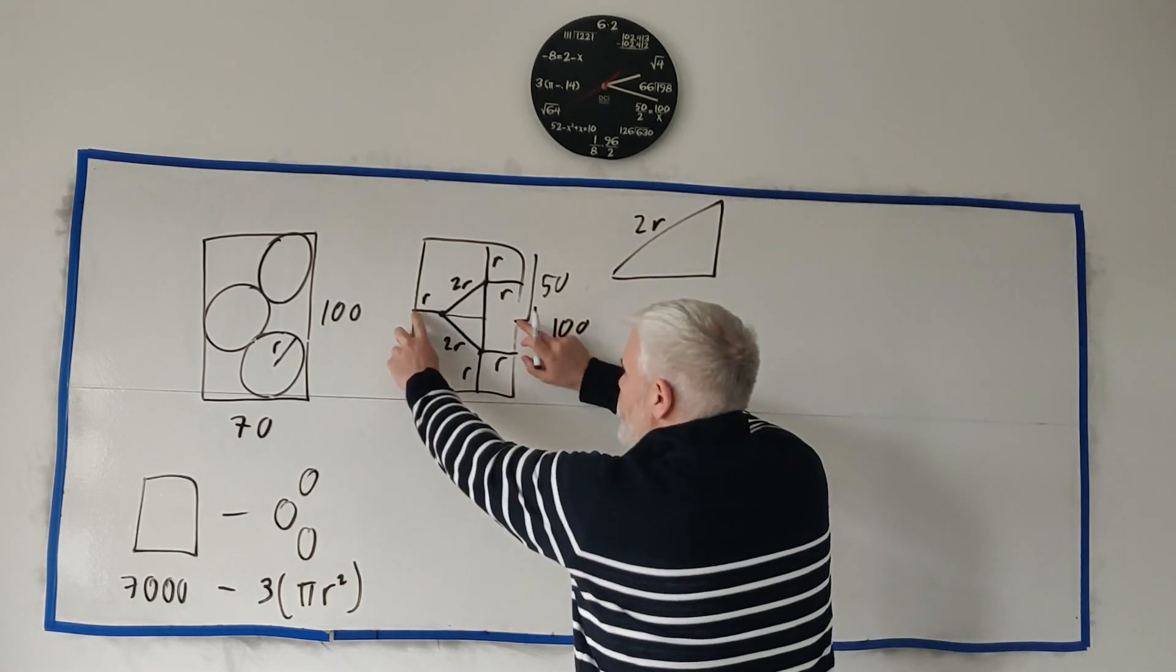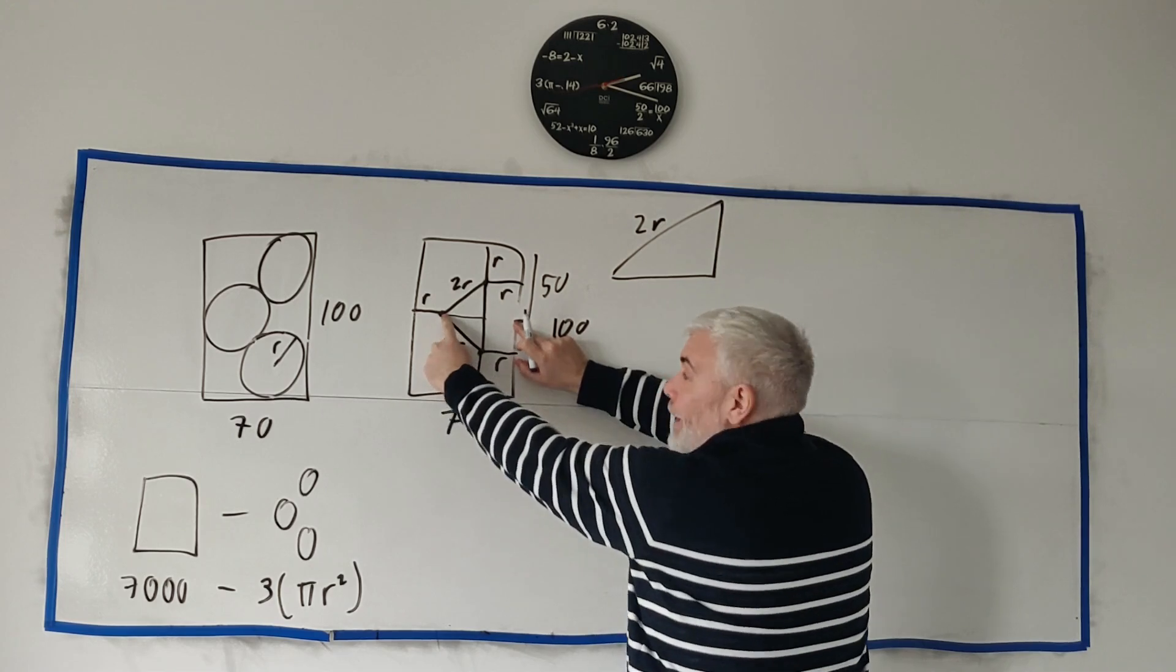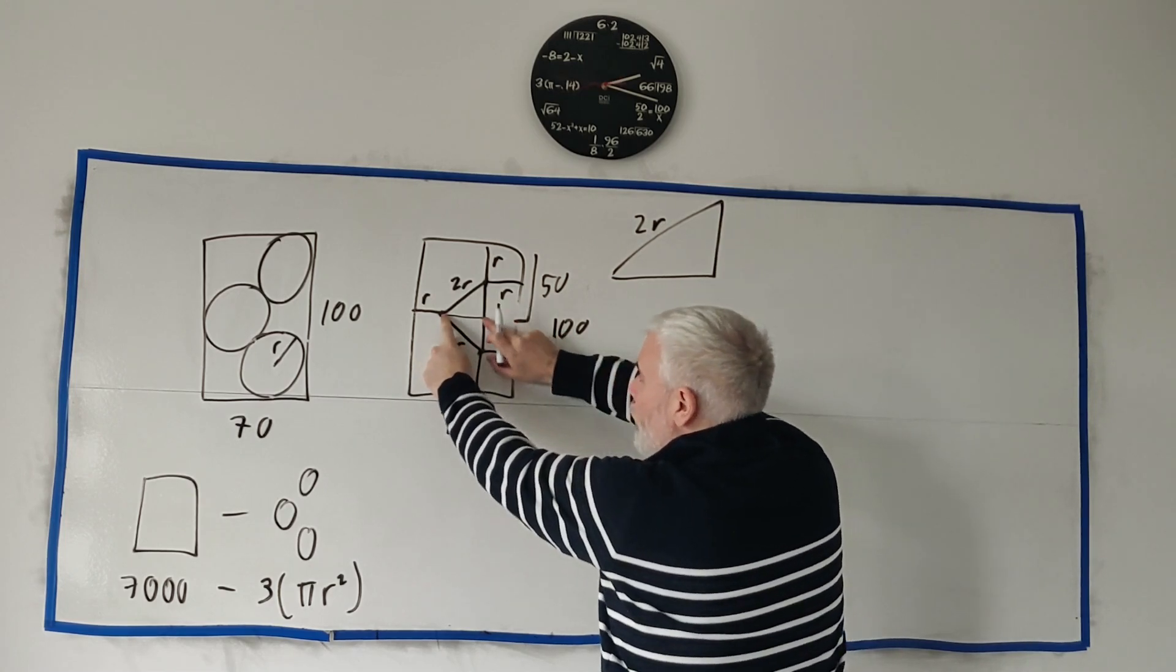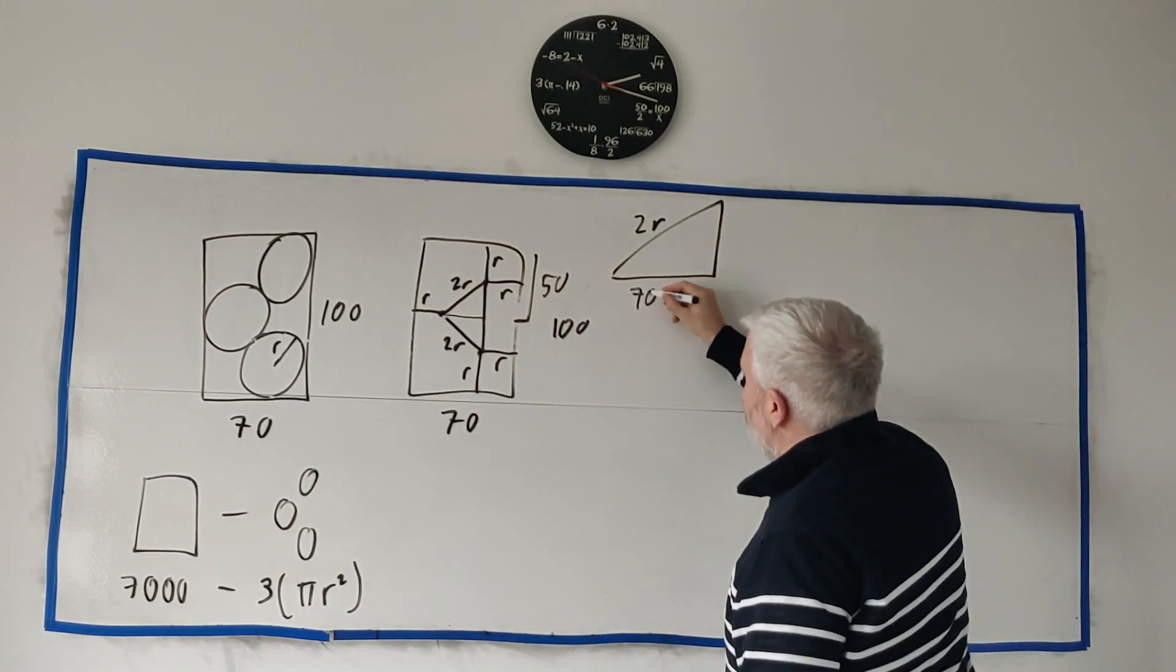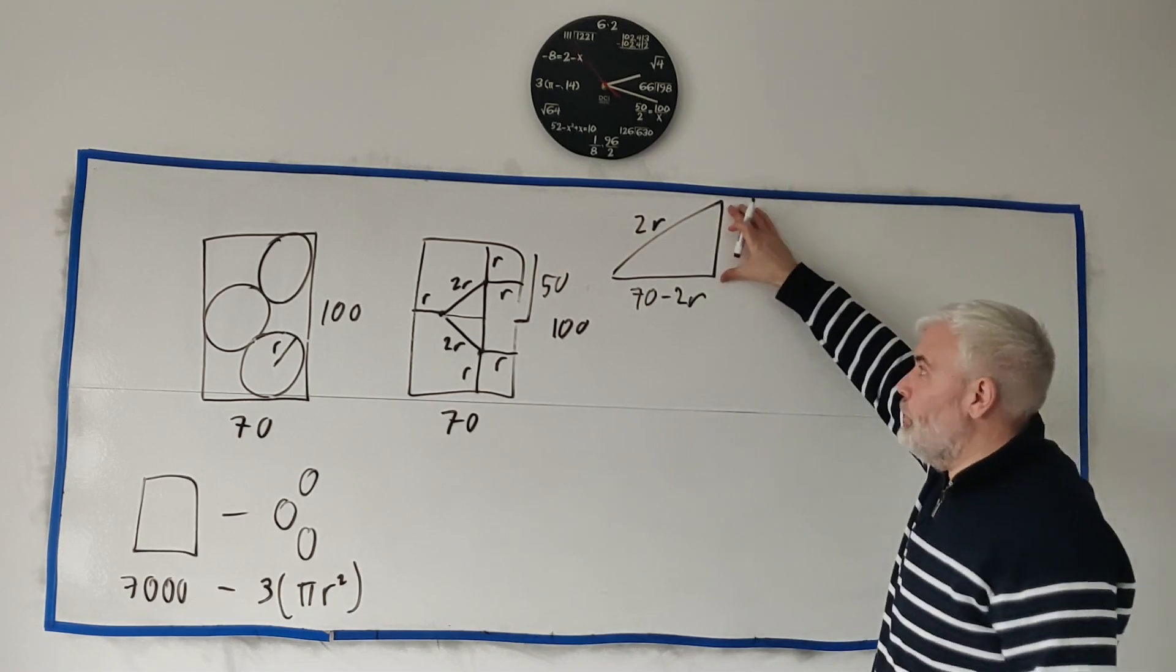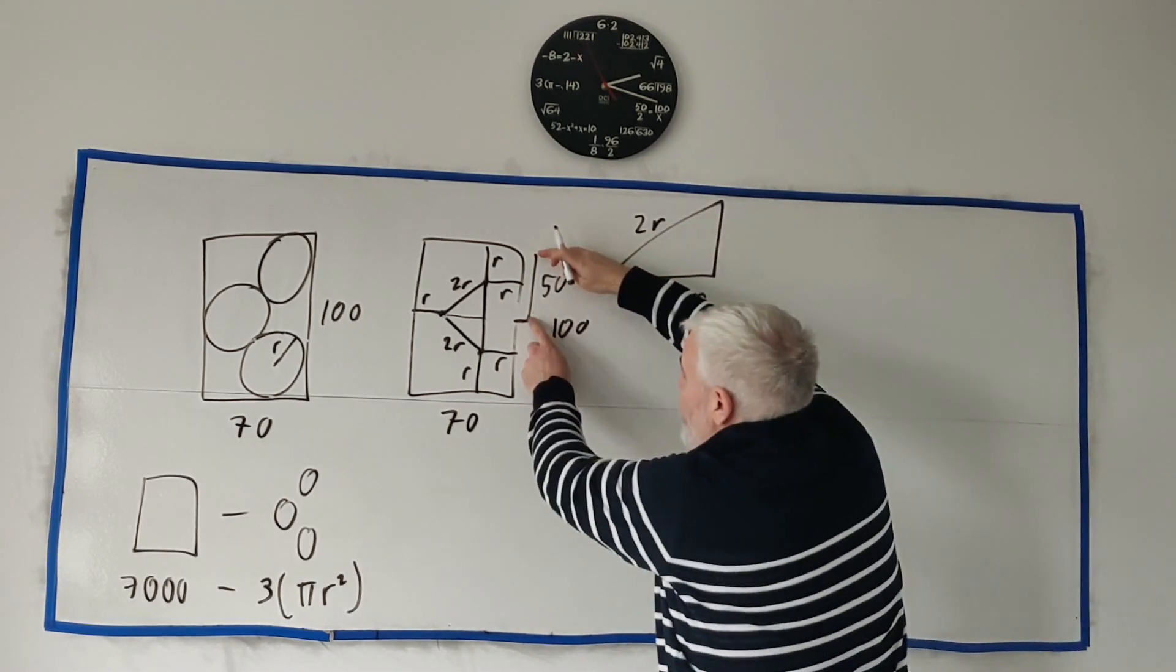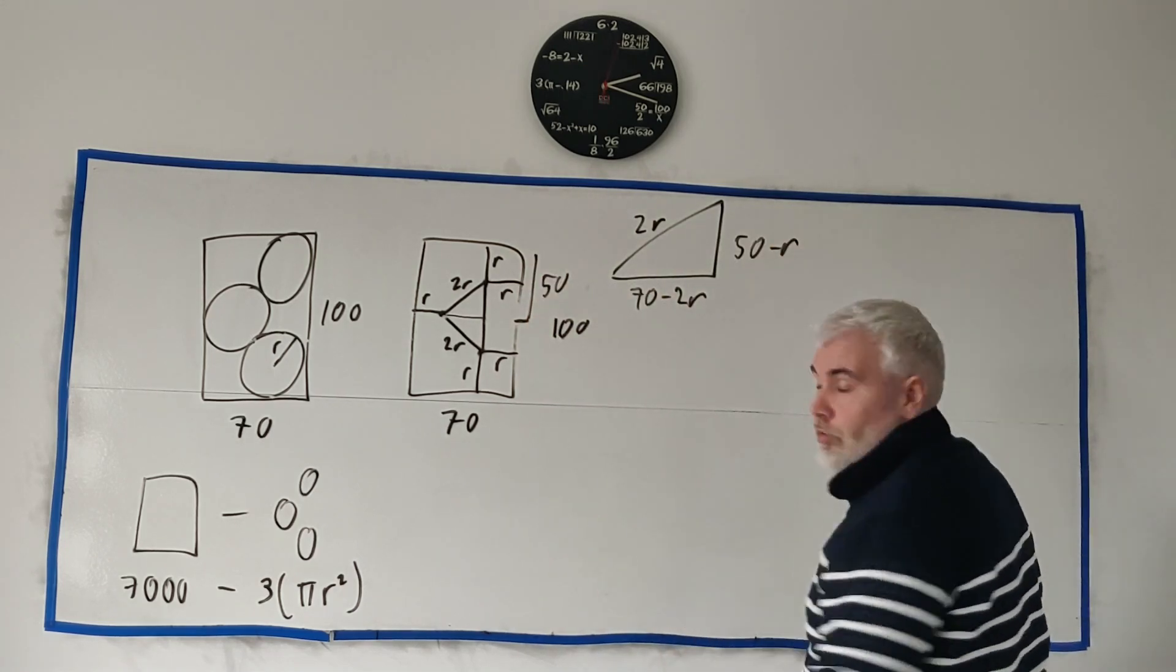So this width is 70. This width here is 70. If I take away this R, 70 minus R. If I take away another R, I get the length I'm looking for. This length here is 70 take away 2 Rs. Very similar with the height. The height here must be 50. Take away this one R. 50 minus R.